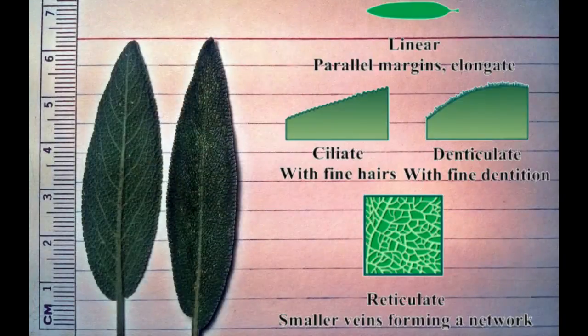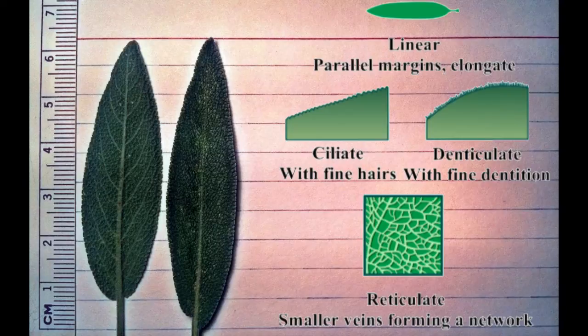Common sage has fine hairs called cilia, with an elongated linear leaf structure, of which there are many small veins visible on the underside of the leaf. The edges are denticulate, with small tooth-like bumps.